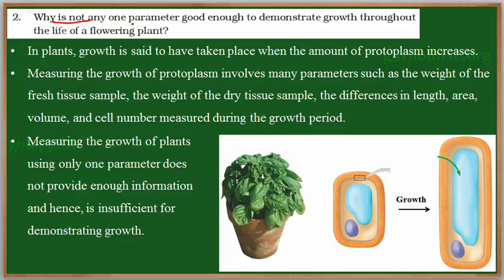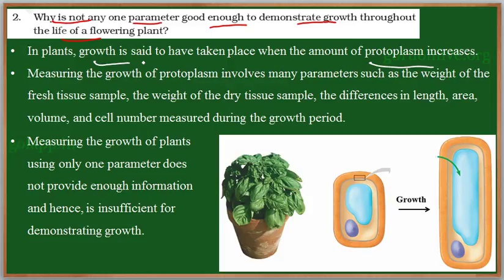Why is not any one parameter good enough to demonstrate the growth throughout the life of a flowering plant? Now let us understand why one parameter is not sufficient to demonstrate growth in a flowering plant. Generally in plants, growth is said to have taken place when the amount of protoplasm increases — growth occurs in plant cells when the protoplasm increases.